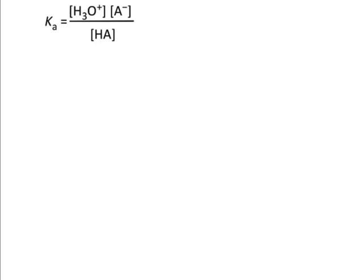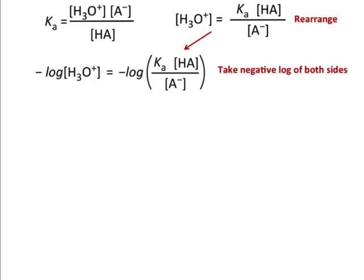This is the equation for Ka, and basically I'm going to do a glorified rearrangement job on this. So let me rearrange this. Solve for H3O+, by dividing both sides by A-, and multiplying both sides by HA. And then I'm going to take the negative log of both sides.